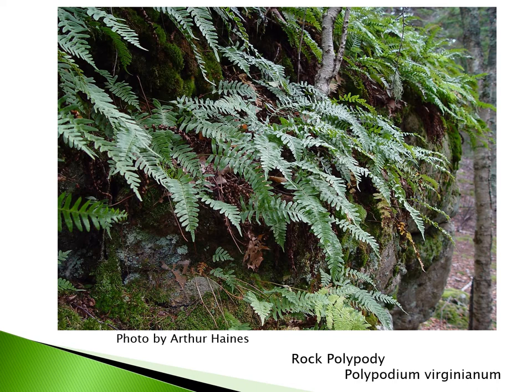Rock polypody, Polypodium virginianum, is a plant that likes to grow on boulders — you can see it here growing on a rock among the mosses. This plant gets to be about six inches tall, and its fronds are about six inches in length. A great plant for rocky areas or a shaded portion of the rock garden. I've been able to establish this in gravelly or sandy soils, so you don't have to apply it only to rocks. It prefers a thinner soil, perhaps with a rock underneath the surface to keep it happy.